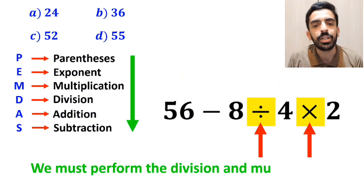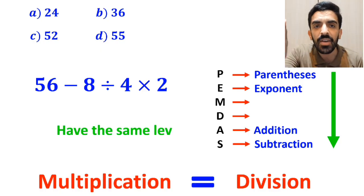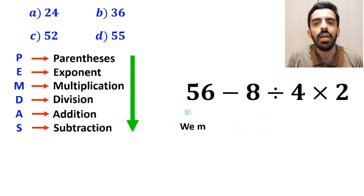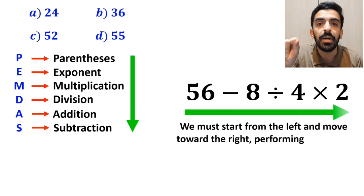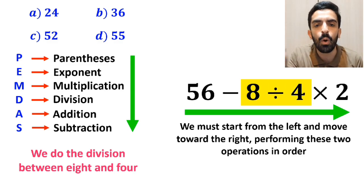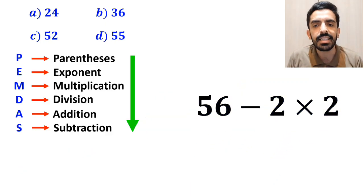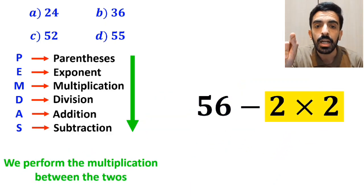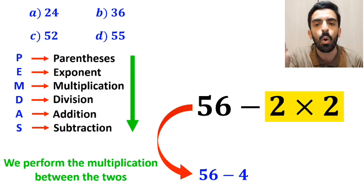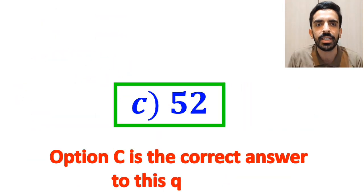Then we must perform the division and multiplication. However, it's very important to understand that in PEMDAS, multiplication and division have the same level of priority. In this situation, we must start from the left and move toward the right, performing these two operations in order. So first we do the division between 8 and 4, and this expression simplifies to 56 minus 2, then times 2. In the final step, we perform the multiplication between the twos, which simplifies this expression to 56 minus 4. And finally, the value of this expression will be 52. Therefore, option C is the correct answer to this question.